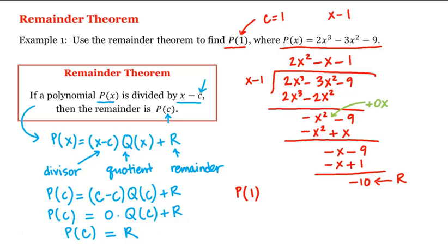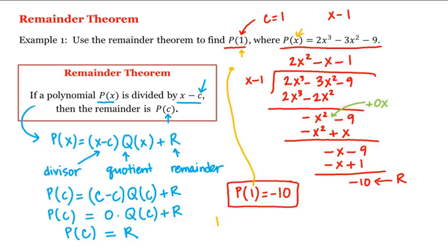When we subtract we get negative 10, which is our remainder. Therefore p of 1 is equal to this remainder, negative 10. We can check this answer by plugging 1 into our polynomial: p of 1 equals 2 times 1 cubed minus 3 times 1 squared minus 9, which is 2 minus 3 minus 9, or 2 minus 12, which sure enough is negative 10.